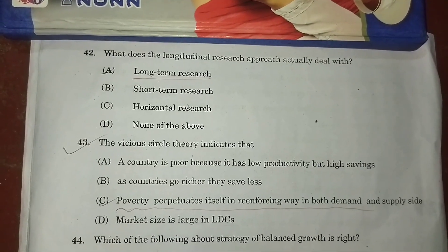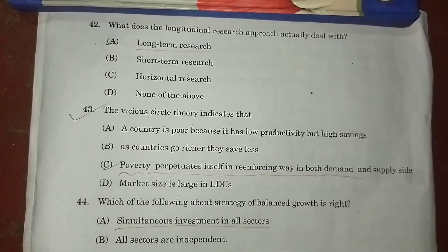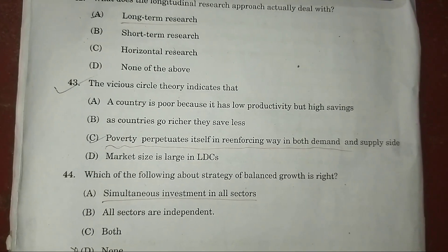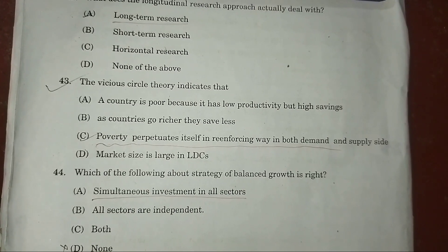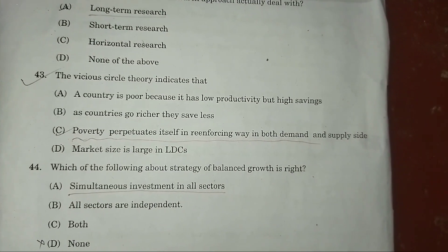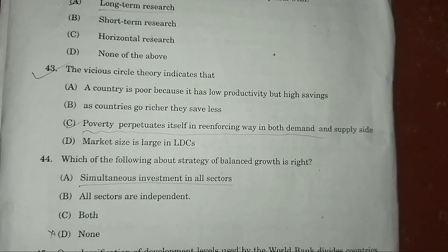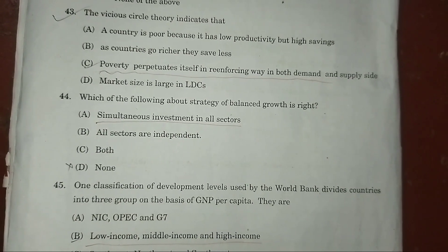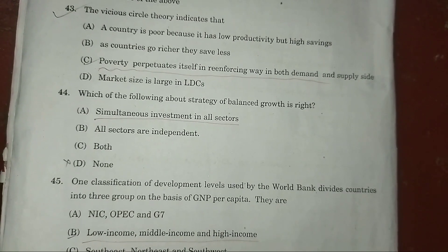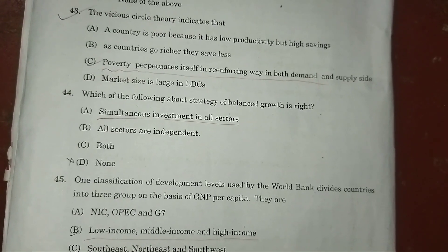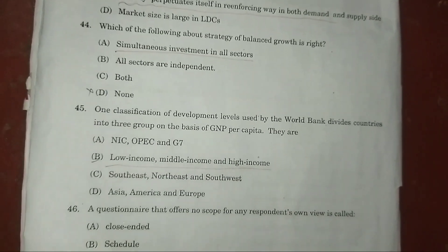Question 42: What does the longitudinal research approach actually deal with? Answer: A — long-term research. Question 43: The vicious cycle theory indicates — answer: C — that poverty perpetuates itself, reinforcing itself on both the demand and supply side. Question 44: Which of the following strategies of balanced growth is correct? Answer: A — simultaneous investment in all sectors.